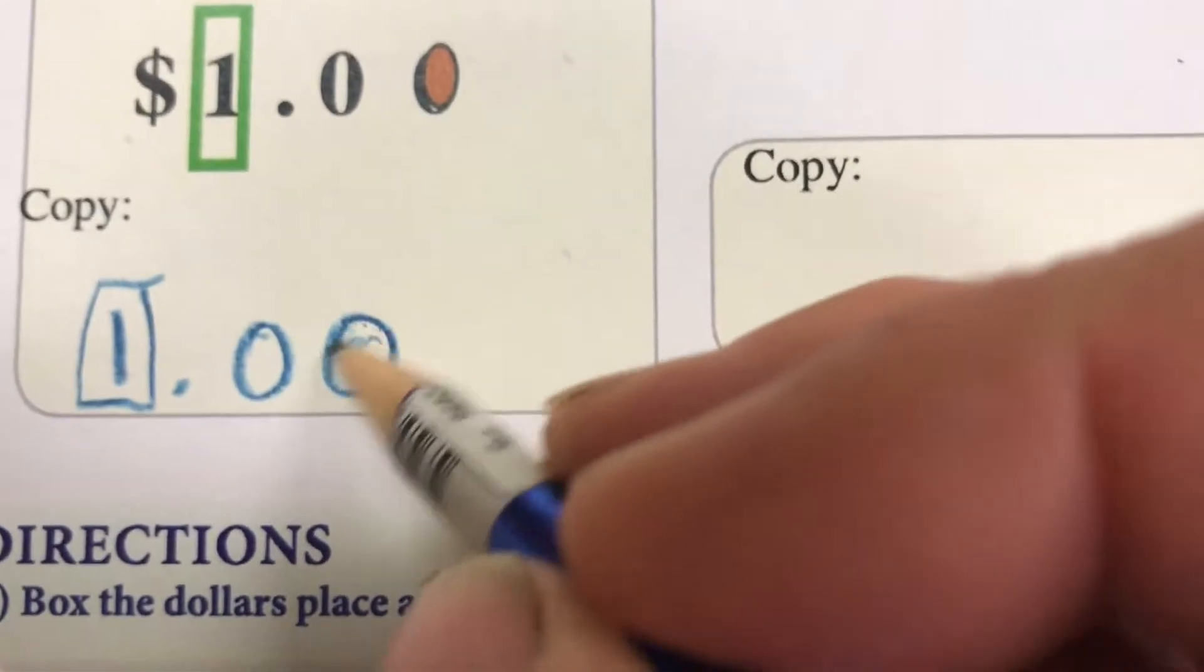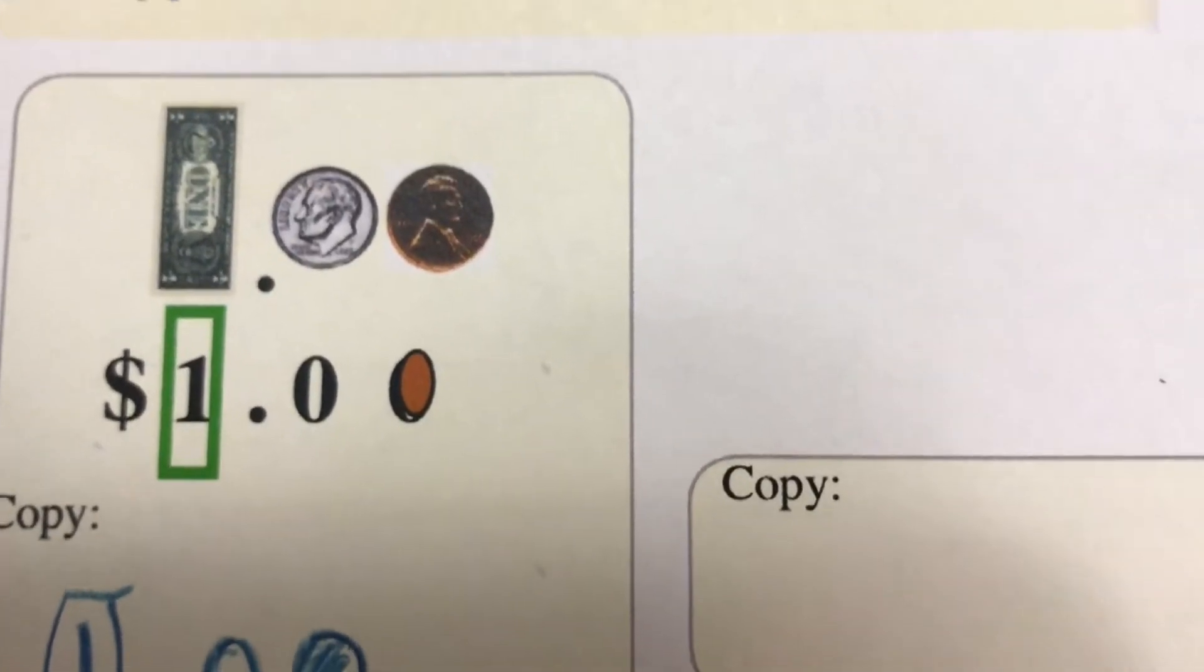The other thing you can do is find the pennies place, shade that in, because if you think of the pennies, it's a different color than all the other silver change. Now we have the beginning, the dollars place, a decimal point, dimes which are silver, pennies.